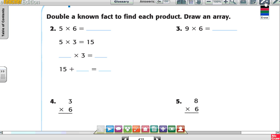So it says double a known fact to find each product. So I need to double. So what they did was I need to find 5 times 6. What number did they decompose? 6 into 3 plus 3, right? So now I have 5 times 3 equals 15 plus 5 times 3 equals 15. So I have 15 plus 15, which is? What is it? 30. So I know that 5 times 6 is 30.